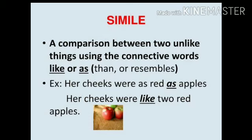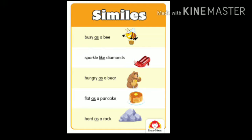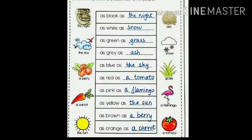Simile ka matlab hota hai — whenever we compare two unlike things, alag-alag cheezo ko compare karte hai, by using the word 'as' or 'like,' that is called a simile. See its examples: busy as a bee — here the word 'busy' is compared to a bee using 'as.' Sparkle like diamonds, hungry as a bear, flat as a pancake, hard as a rock. I hope you all have understood. Let's see more examples.